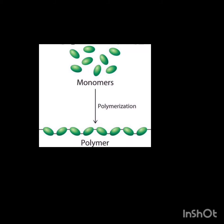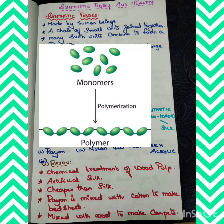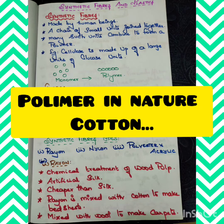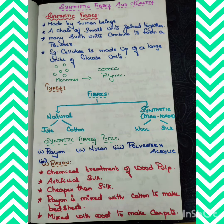Cellulose is a polymer — that is, cellulose is made up of a large number of glucose units. Tiny glucose units join together to form cellulose. Now we will move on to the synthetic fiber types. We have already talked about the classification.